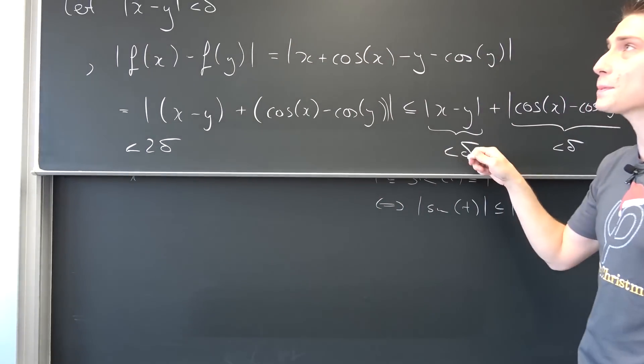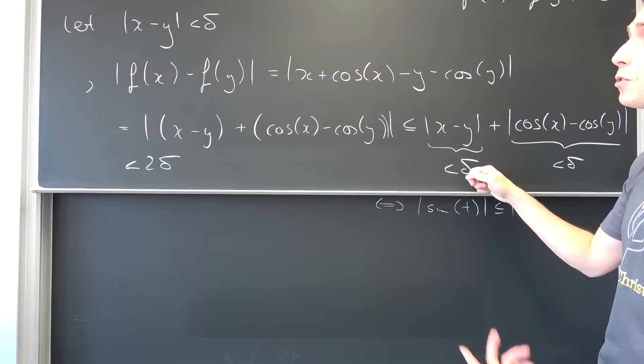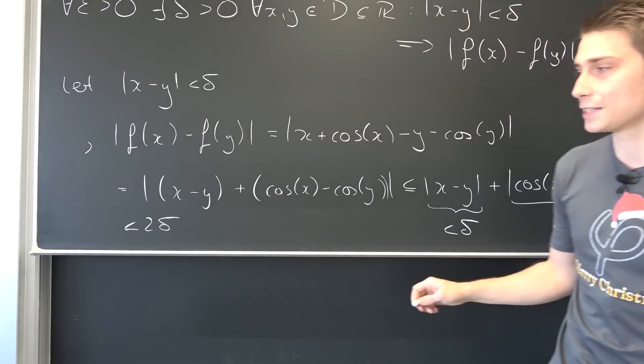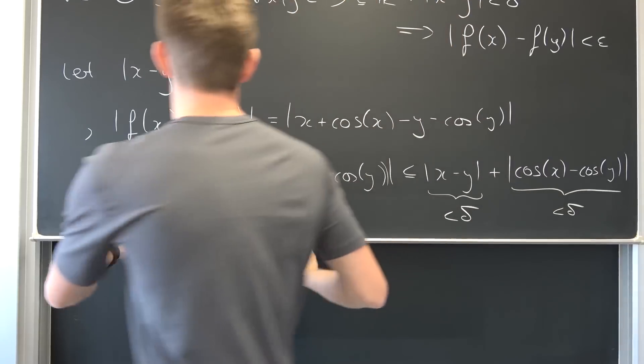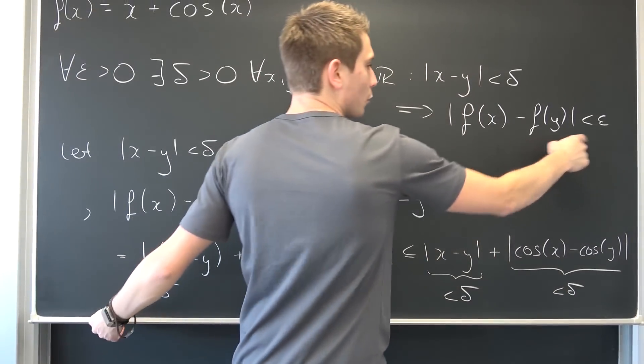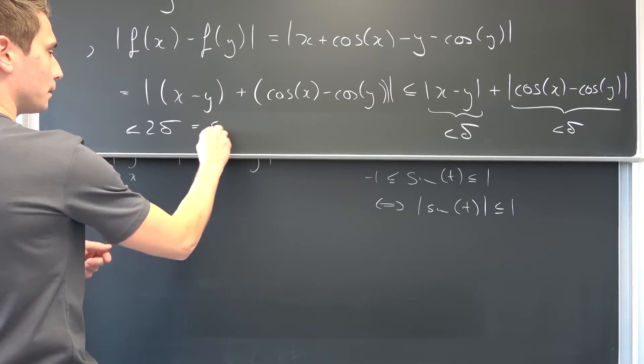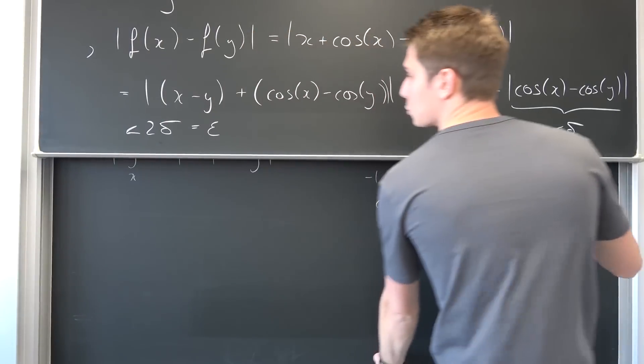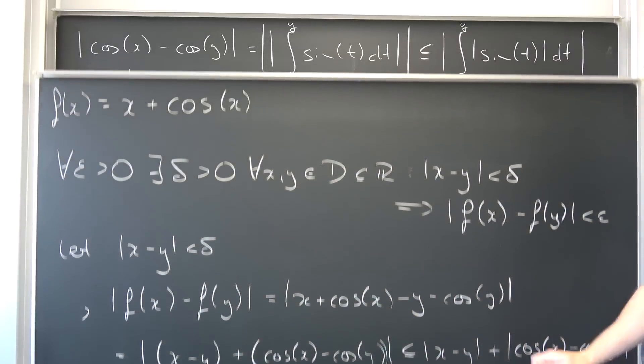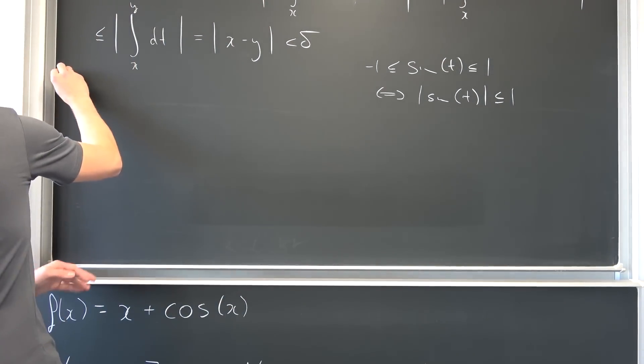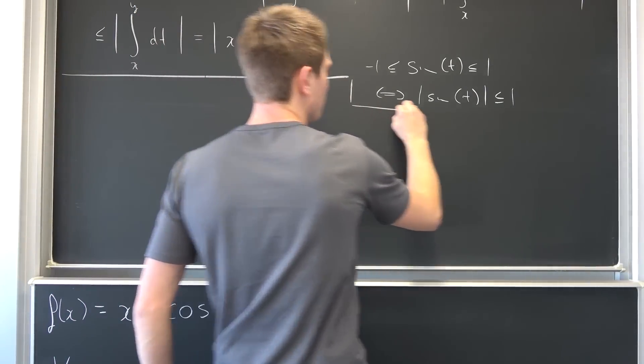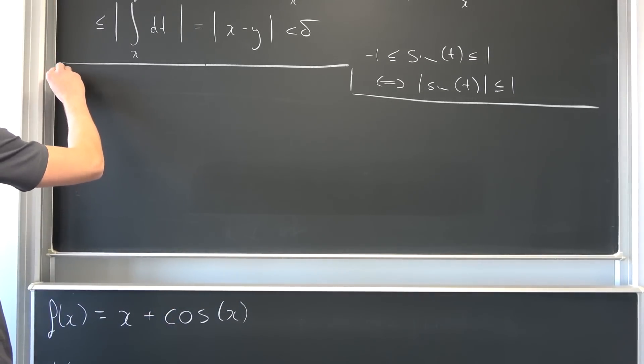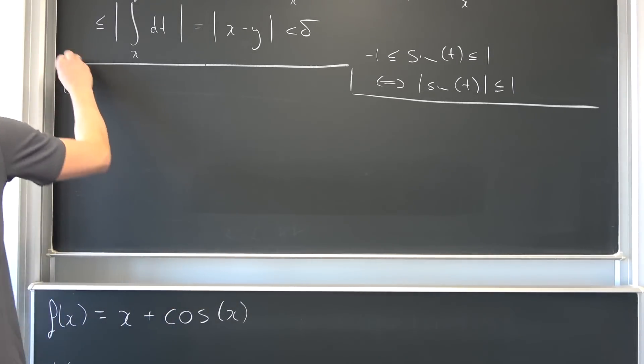Now we are going to choose our epsilon nicely, namely that our epsilon is nothing other than two times delta in the proof. Because we want to get it to the point where this whole thing is less than epsilon, we are going to choose delta to be equal to epsilon over two. Now we are going to formulate our proof for the uniform continuity of this function on the whole of the real numbers. This is the proof part.